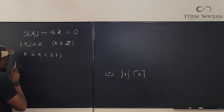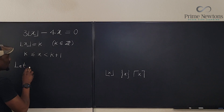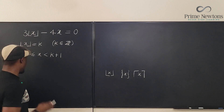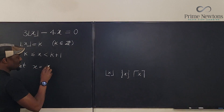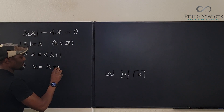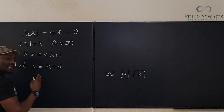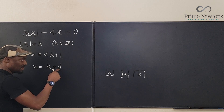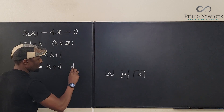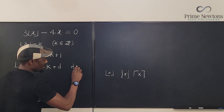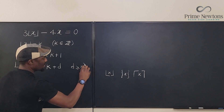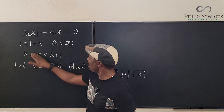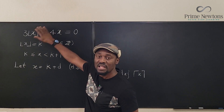For now, we know that any x in an equation is always this integer plus a fractional part. We're going to call that fractional part d. Let x be equal to k plus d, where k is the floor and d is the fractional part. Note that d is greater than or equal to zero.